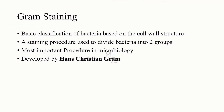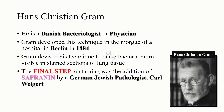Gram staining is used for the basic classification of bacteria based on cell wall structure. It is a staining procedure used to divide bacteria into two groups and is the most important procedure in microbiology. It was developed by Hans Christian Gram, who was a Danish bacteriologist or physician. Gram developed this technique in the morgue of a hospital in Berlin in 1884.